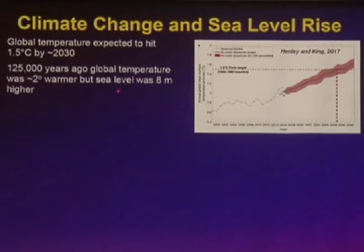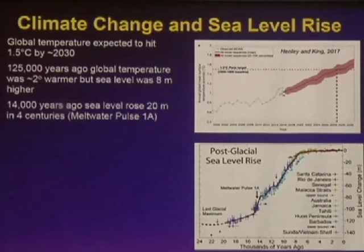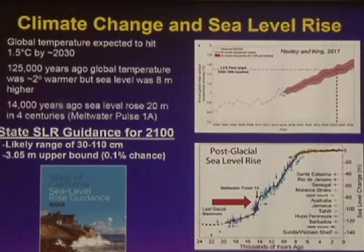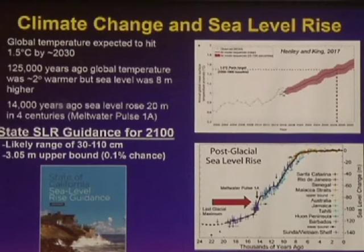There are about 600 million people currently living within 8 meters of sea level. We've had very rapid sea level rise in the recent geologic past — as much as 4 to 5 meters per century with much less warming. So we know multi-meter sea level rise is possible over the next century. California's sea level rise guidance projects a likely range of about 30 to 110 centimeters — about 1 to 3 feet — although 110 centimeters is now believed to be a virtual certainty. There is also an upper bound of as much as 3 meters or 10 feet over the next century.